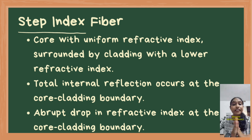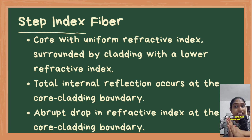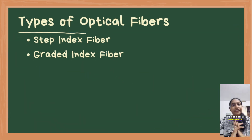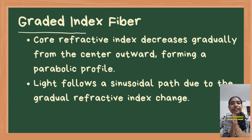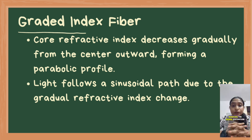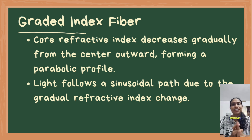The first is step index fiber, characterized by a uniform refractive index in the core and an abrupt change at the core-cladding boundary. The second is graded index fiber, where the core's refractive index gradually decreases from the center outward, reducing signal distortion and improving transmission efficiency.